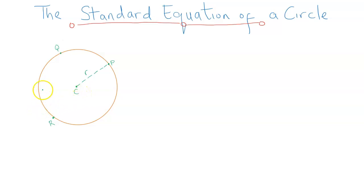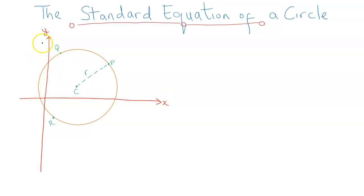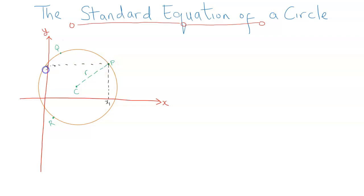Now let's take it a step further and introduce the X and Y axis. The circle can lie anywhere on this plane. Having obtained points P, Q, and R, I can obtain the coordinates of each point by tracing. Tracing to the X axis gives X1, and tracing horizontally gives the Y coordinate, Y1. So point P has coordinates X1, Y1.